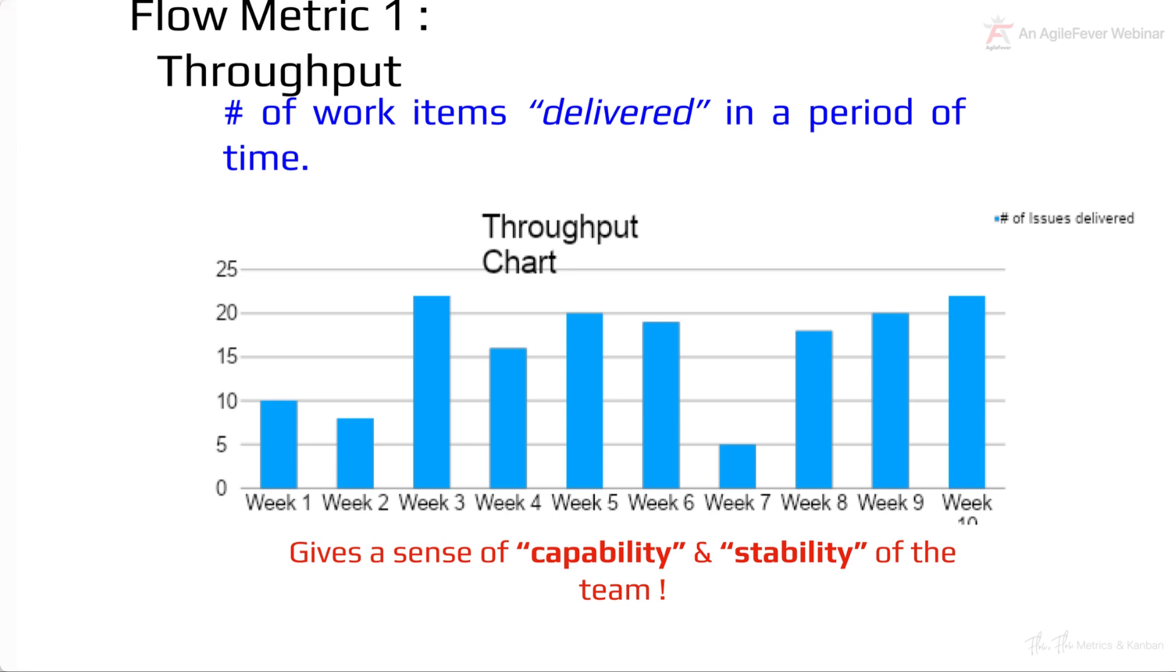So, week one, some ten, week two, some seven and a half, eight, and so on. This gives a fairly good sense of the capability and stability of the team. If you can notice, this team is consistently being able to deliver around between ten to fifteen stories or issues in a given period of time.